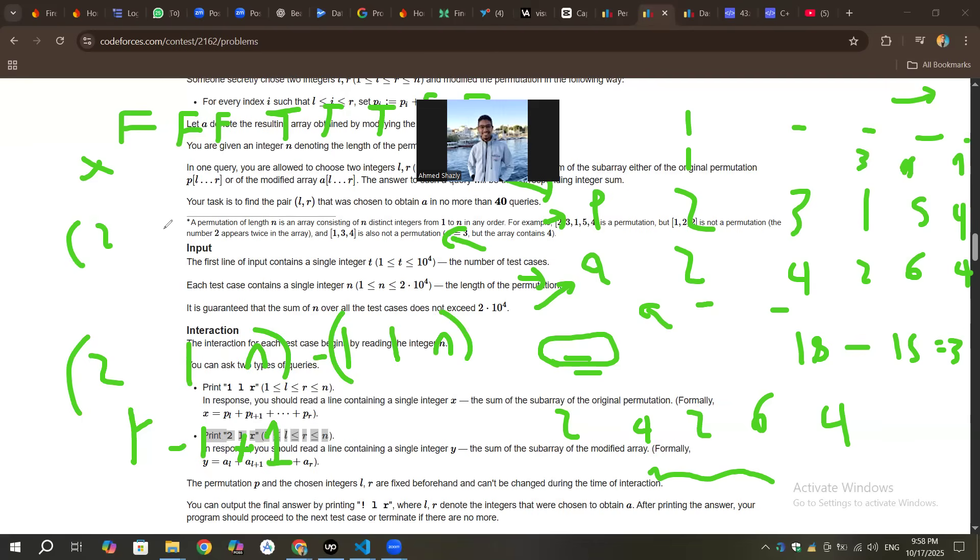let's say 2, 1, and we can say, let's say mid, because this is binary search. Q is the function of query.